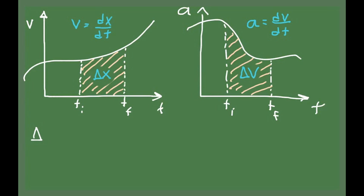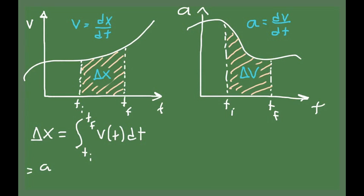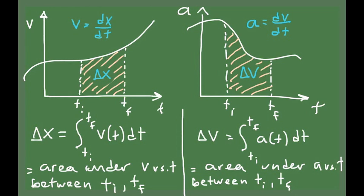Everything that we have done so far to establish the connection for position and velocity, we can repeat the same argument for velocity as a function of acceleration — taking the information of the acceleration and deducing the information about the velocity of the object. The area under the curve can be mathematically expressed as the integral between TI and TF of the velocity with respect to time, and for the case of acceleration, the integral is the area under the acceleration versus time plot between TI and TF.